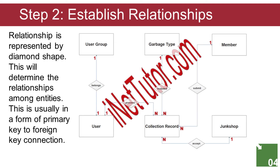Step 2: Establish relationships. A relationship is represented by a diamond shape. This step will determine the relationships among entities, usually in the form of a primary key to foreign key connection. After we have specified our entities, it is time to connect or establish relationships among them.